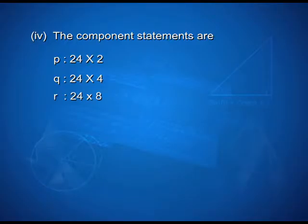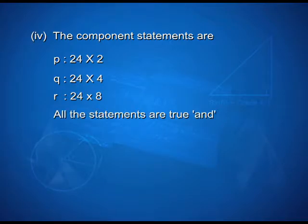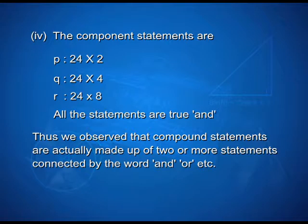Third, the component statements are P: Chandigarh is the capital of Haryana, and Q: Chandigarh is the capital of Uttar Pradesh. The first statement is true but the second is false. The connecting word is AND. Another example has component statements P: 24 is a multiple of 2, Q: 24 is a multiple of 4, and R: 24 is a multiple of 8.